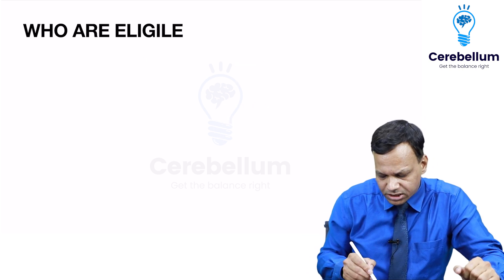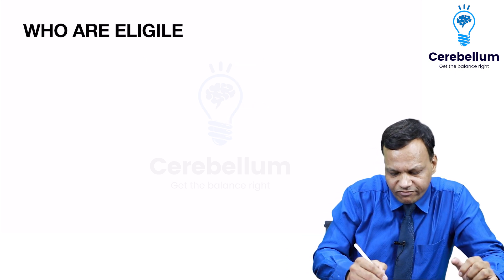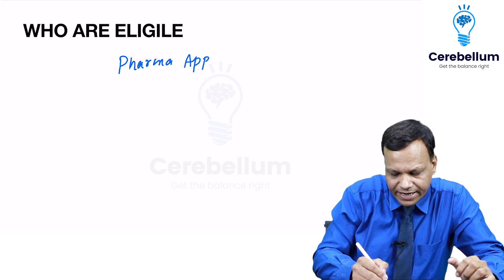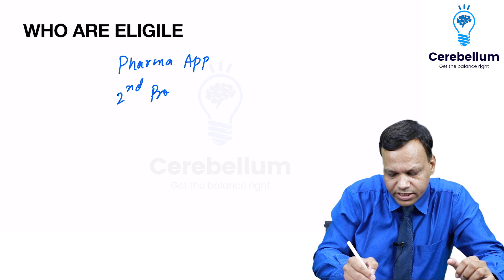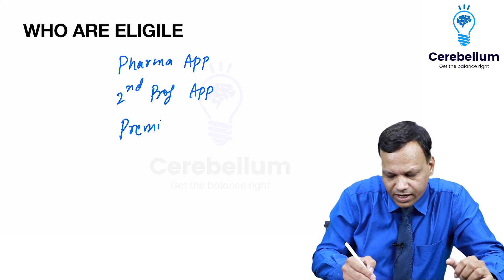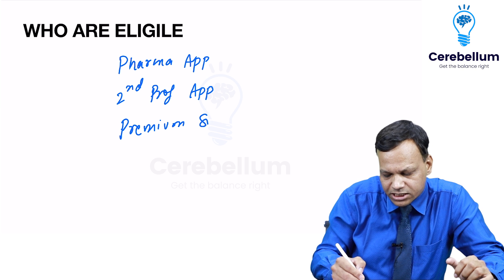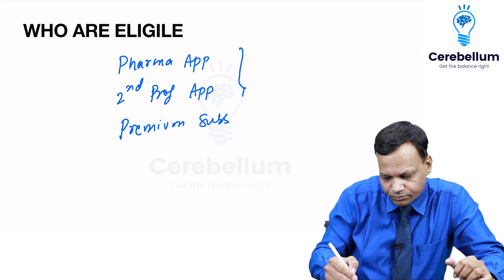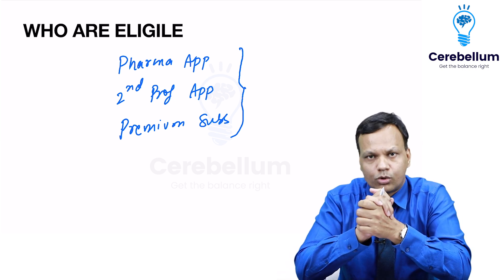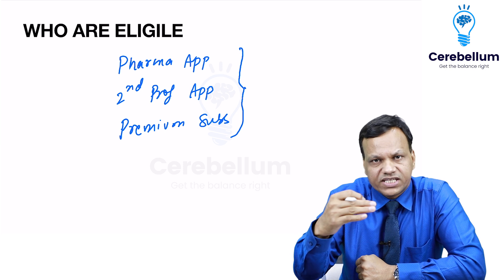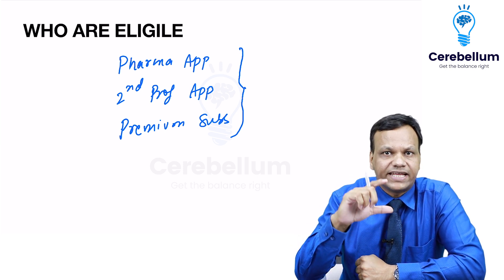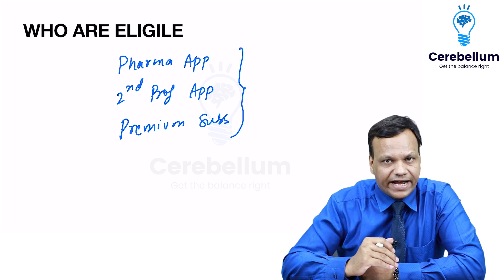Who all are eligible to give this test? My Pharma app subscribers, 2nd prof app subscribers, and premium subscribers of our app — they are eligible for these tests. After the test, after 5:30 when the test closes, other subscribers can also give the test, but they will not get any rank. Those who attempt during the window will get the rank.